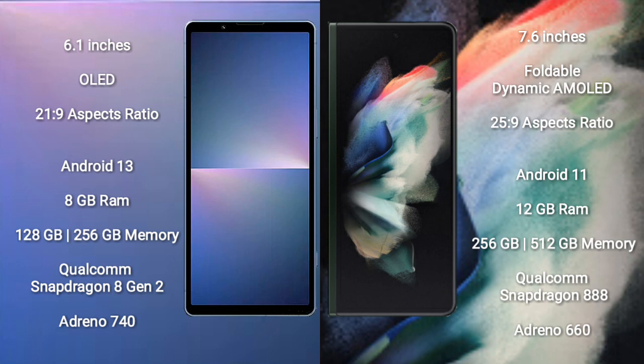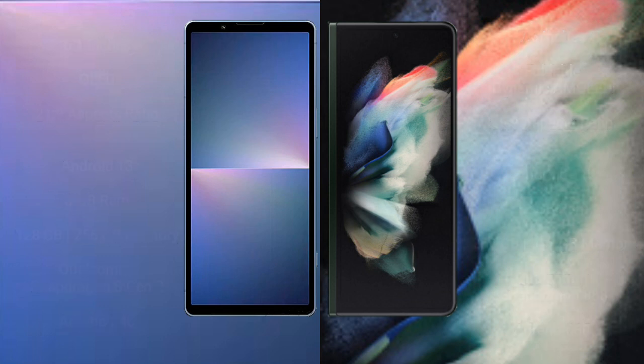Samsung Galaxy Z Fold 3 comes with 12GB RAM and 256GB or 512GB internal storage, a Qualcomm Snapdragon 888 processor, and GPU Adreno 660.